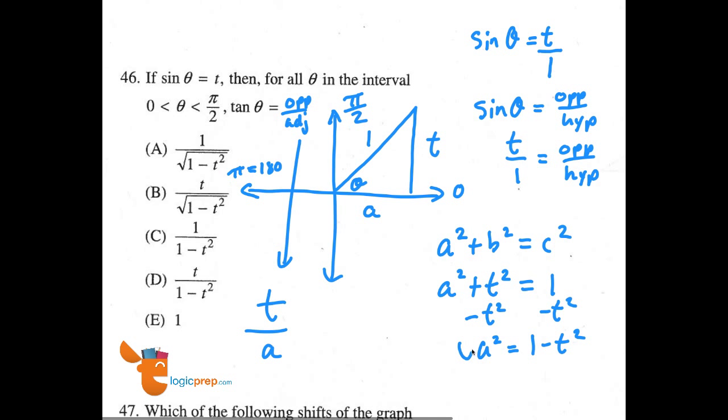And now to solve for A, we'll square root both sides. And now we have A equals the square root of 1 minus t squared. So this side right here, we can also call the square root of 1 minus t squared.